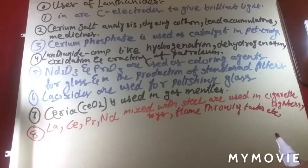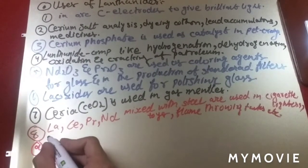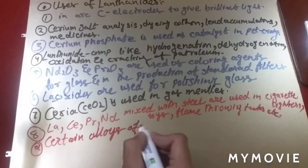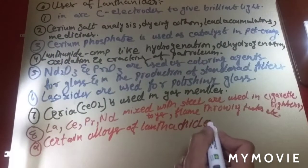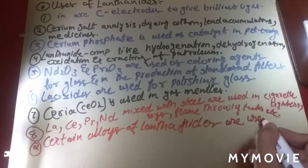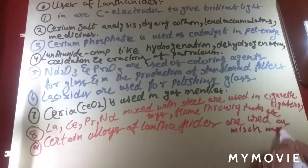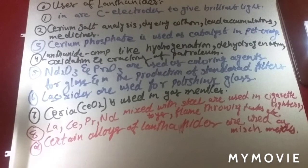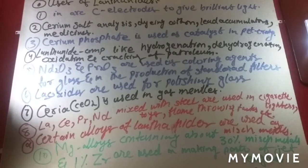Certain alloys of lanthanide elements are known as misch metals. Mg alloys containing about 30% misch metal and 1% Zr are used in making parts of jet engines.